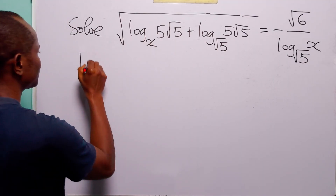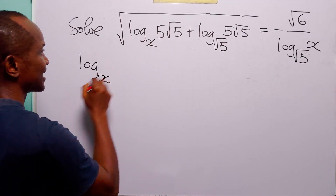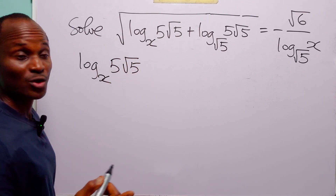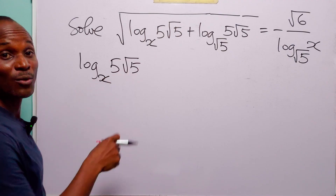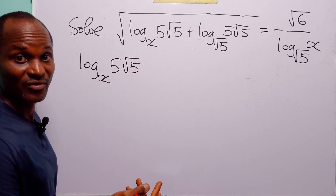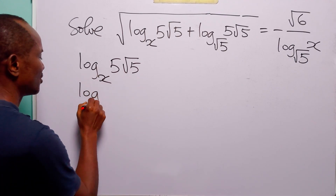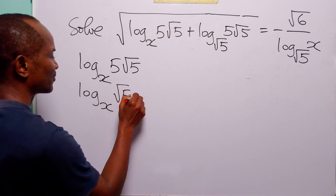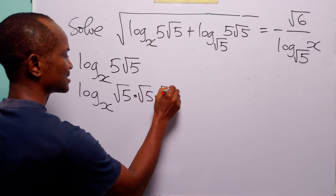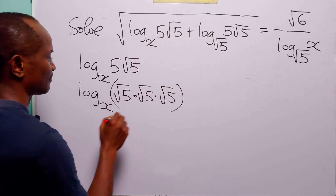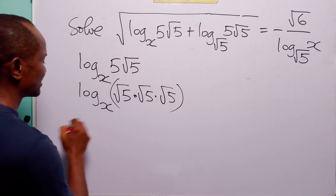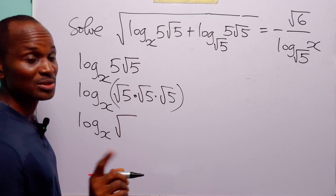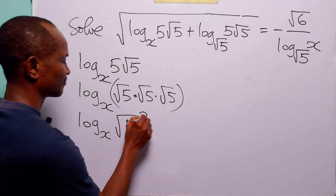Here we have log to base x of 5 times root 5. But you know that 5 is equal to root 5 times root 5, so this is the same as log to base x of root 5 times root 5, which we can write as log to base x of root 5 to the power 3.